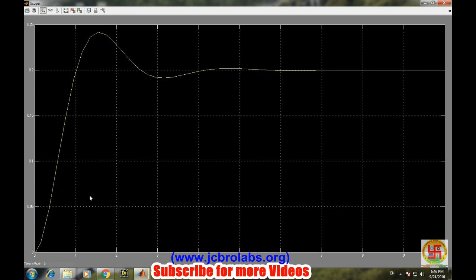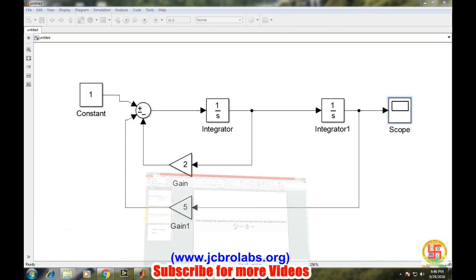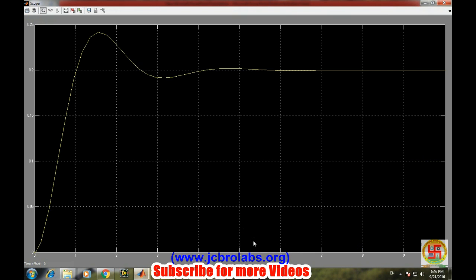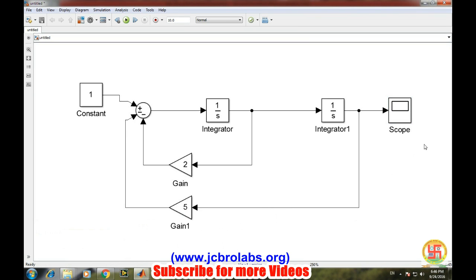So this is the output of our Simulink block diagram, that is the output of this differential equation in waveform. So it is some kind of damped system with the maximum value of 0.2. This is how we represent or we implement any differential equation in Simulink.